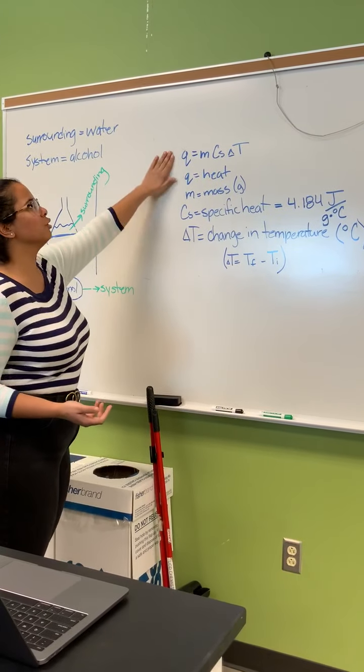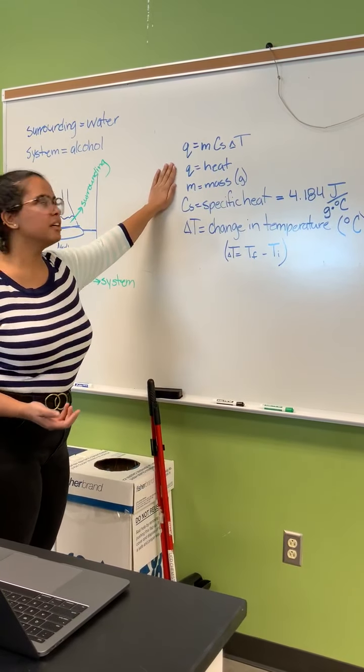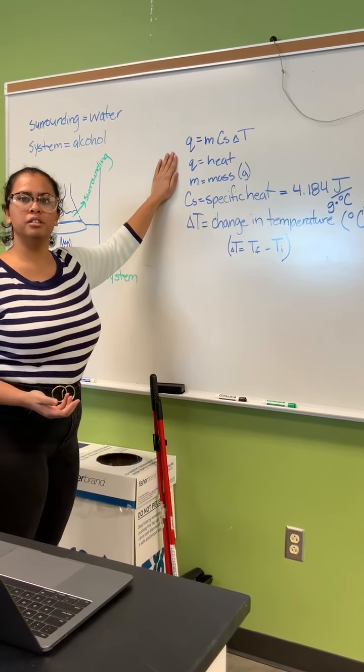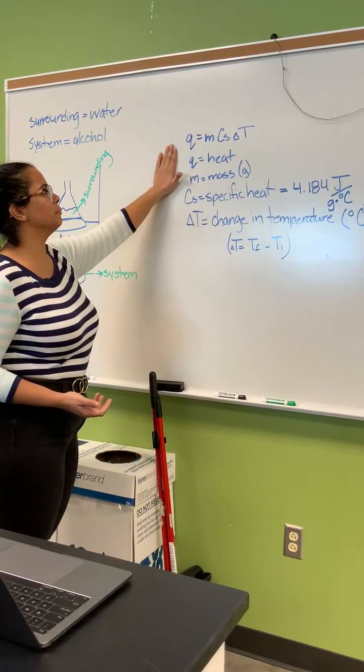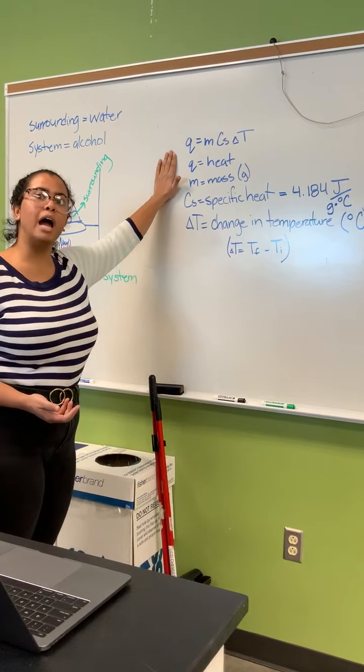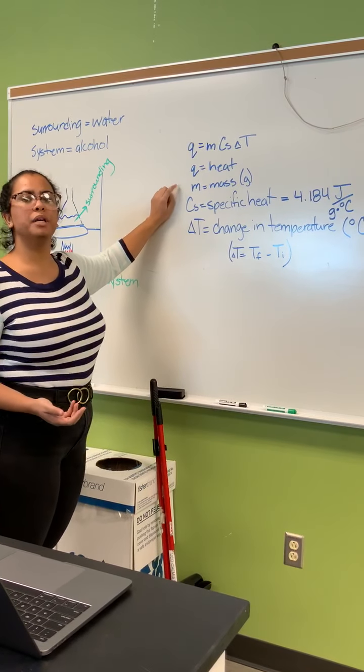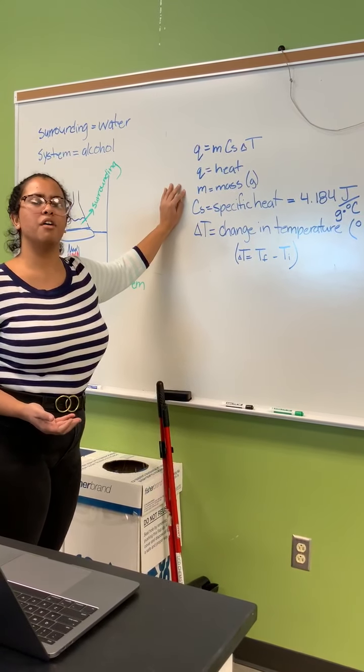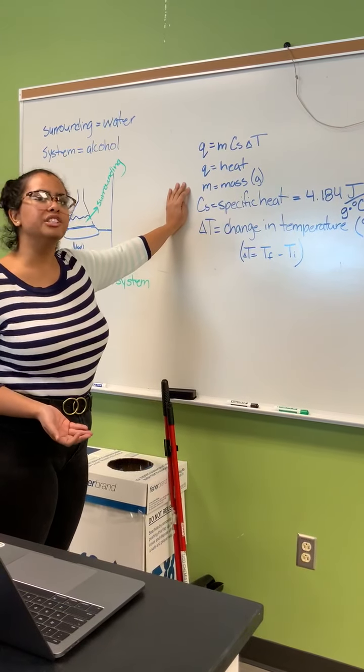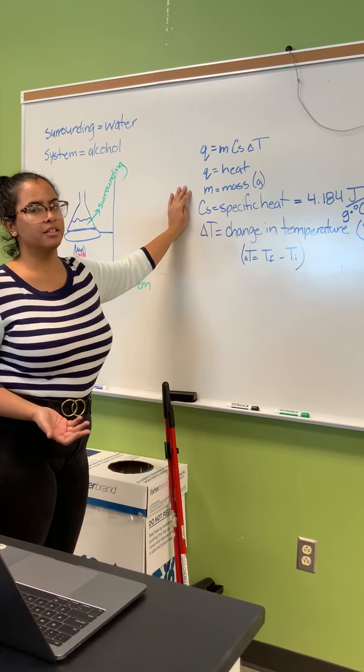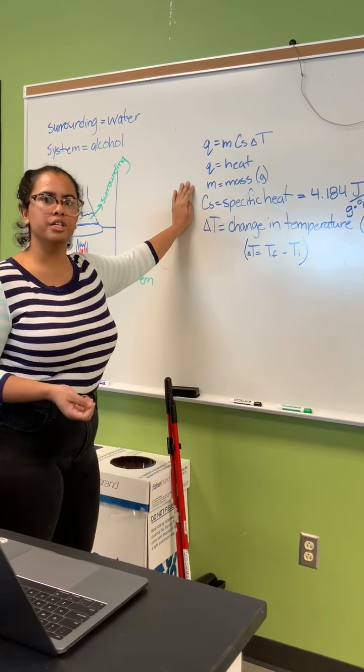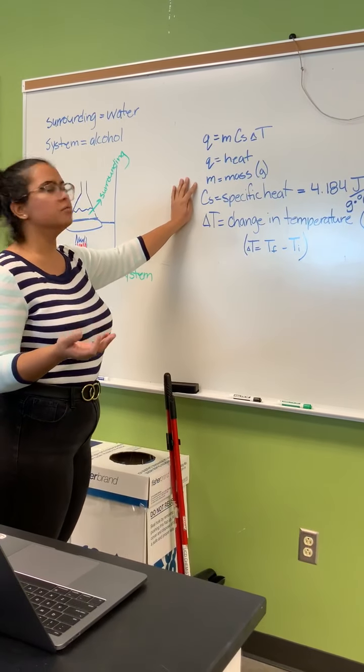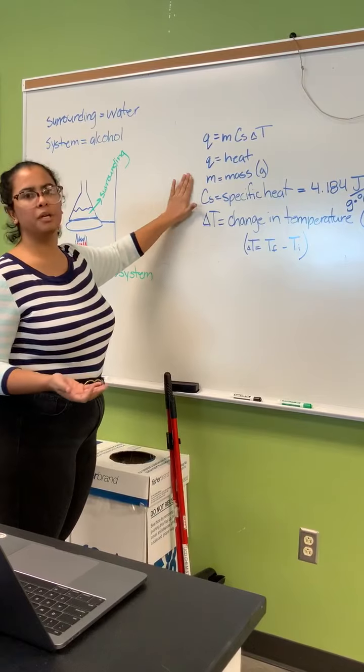So in q equals mcΔT, q means heat, it's always in joules. m is the mass - here, since it's the q equals mcΔT of the surroundings, the mass that we will be using is the mass of the water. We had 100 milliliters of water and the density of water is 1 gram per milliliter, so we have 100 grams of water, that's the mass that we will be using.